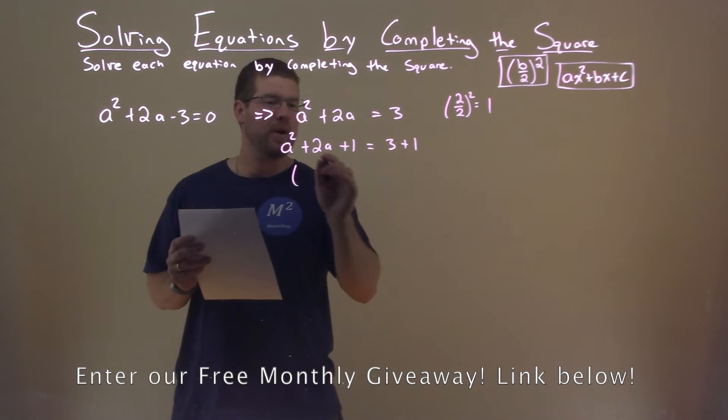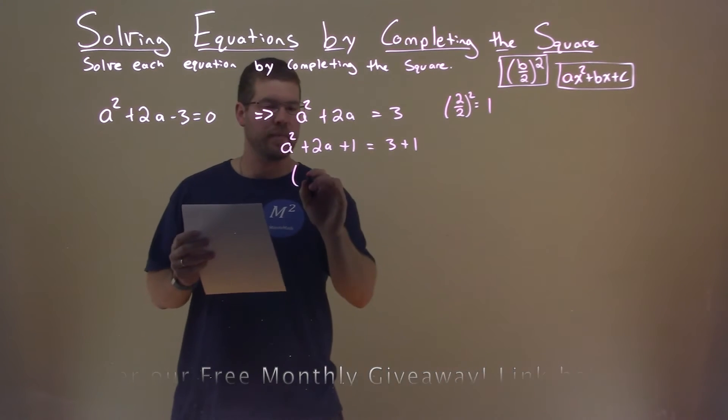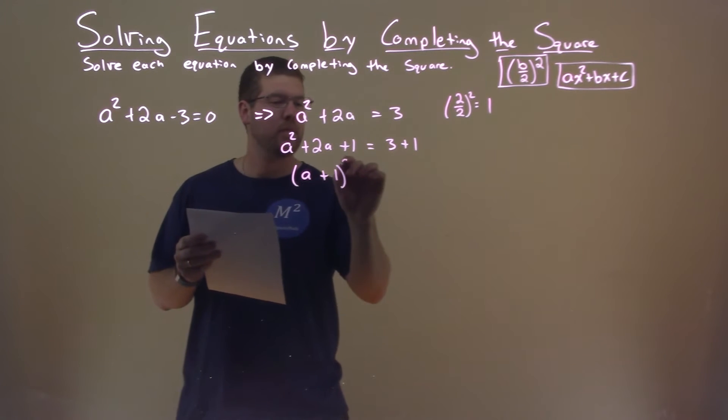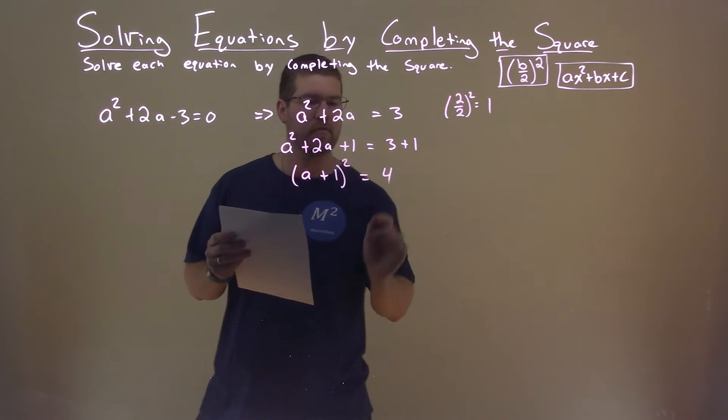That allows us to write the left-hand side as a perfect square. That is a plus 1, all squared, is equal to 4 here.